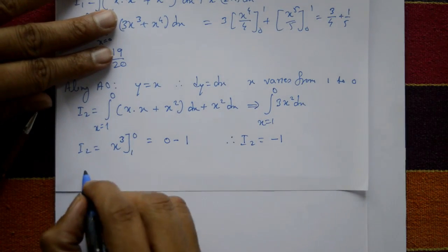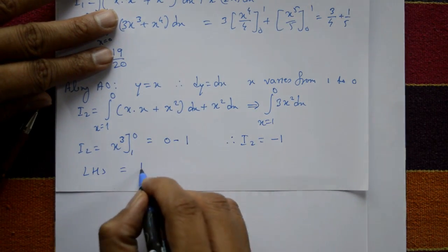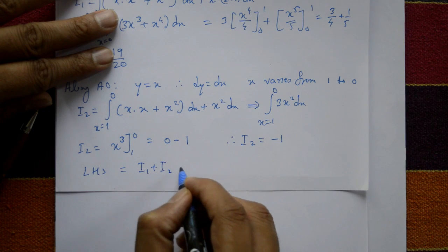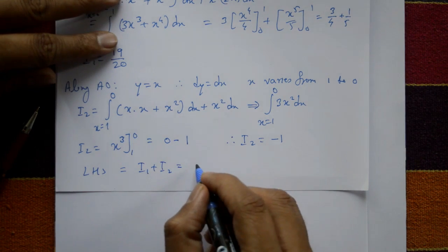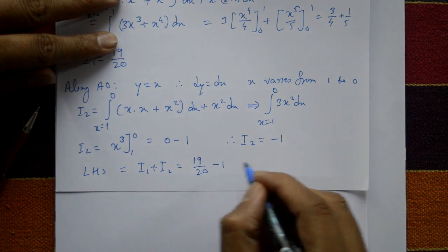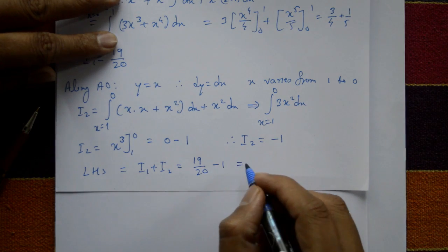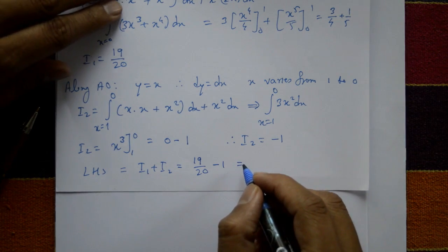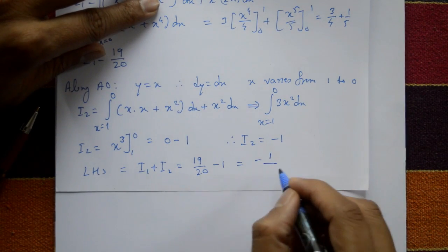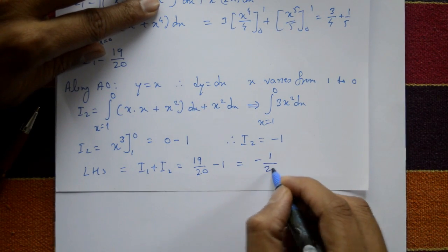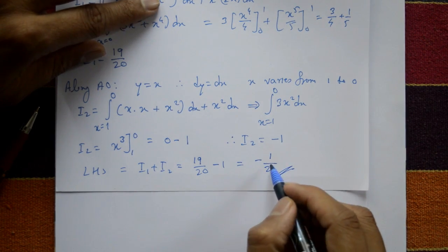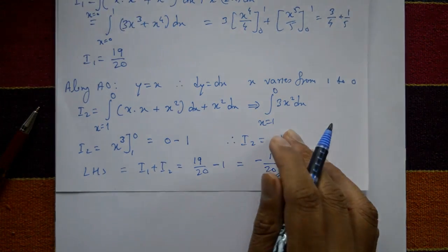The left-hand side LHS = I1 + I2 = 19/20 + (-1) = 19/20 - 20/20 = -1/20. So LHS = -1/20. We now need to show the right-hand side also equals -1/20.